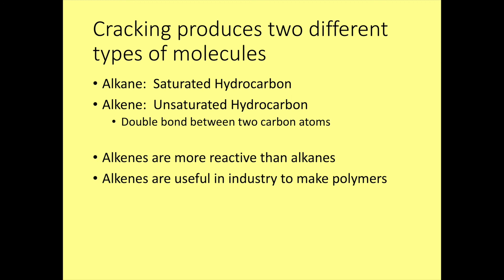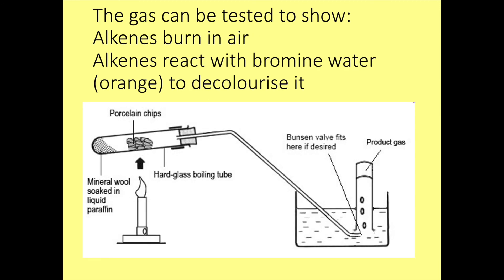In terms of alkene reactivity, we can use this to our advantage to test whether something is an alkene or an alkane. As alkenes are more reactive, we can use something that will react with the alkene but not the alkane. What we use is bromine water. Bromine water is orange, and when it reacts with alkenes it decolourises — it turns colourless. Alkenes also do burn in air but tend to be more smoky compared to alkanes. The test for alkenes is bromine water going from orange to colourless, confirming the presence of an alkene. With alkanes there's no reaction, so it remains orange.